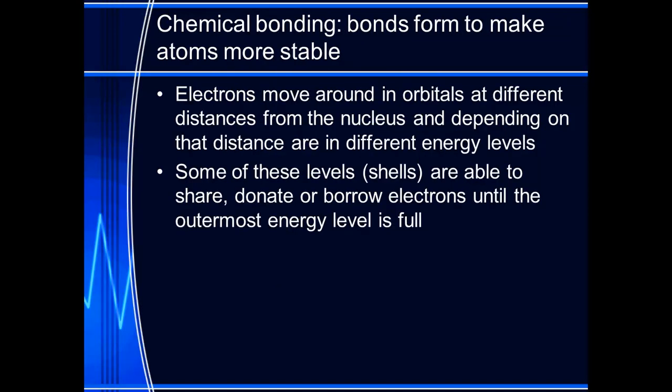Chemicals will bond, elements bond, and atoms bond. They do this to make their combination or their initial atom more stable. As I mentioned, electrons move around the nucleus in orbitals at different distances from that nucleus. Depending upon that distance, there are different energy levels.